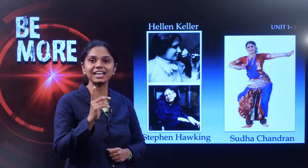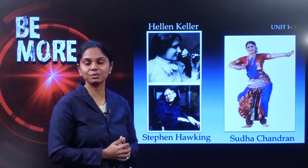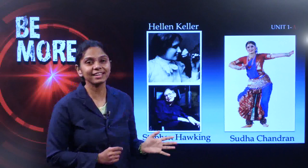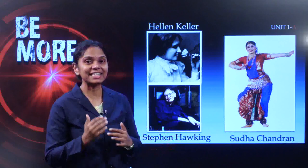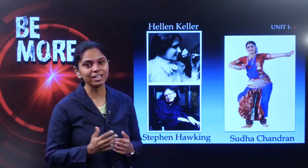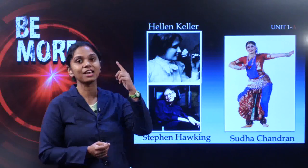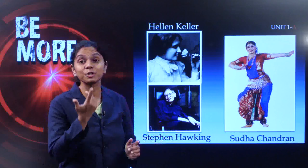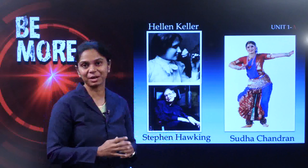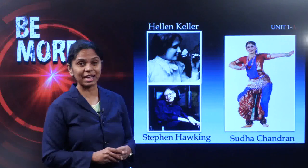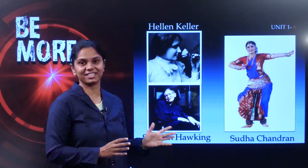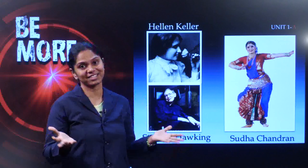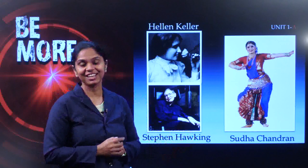Stephen Hawking was diagnosed with a motor neuron disease at the age of 21 — a bright physics student in college. Imagine how he must have felt when he came to know that day by day his entire body was going to be paralyzed from head to toe. Within 10 years, completely paralyzed and unable to even speak. But that did not deter him. He went ahead and became the world's most renowned physicist and cosmologist, explaining the entire black hole of space to this generation.